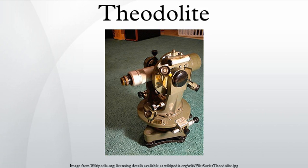Theodolites may be either transit or non-transit. Transit theodolites are those in which the telescope can be inverted in the vertical plane, whereas the rotation in the same plane is restricted to a semicircle for non-transit theodolites. Some types of transit theodolites do not allow the measurement of vertical angles. The builder's level is sometimes mistaken for a transit theodolite, but it measures neither horizontal nor vertical angles. It uses a spirit level to set a telescope level to define a line of sight along a level plane.